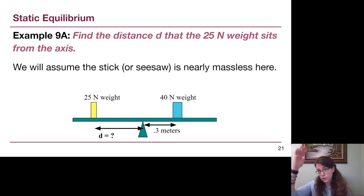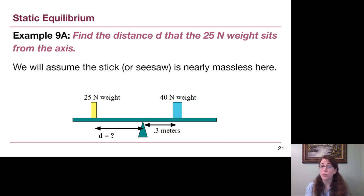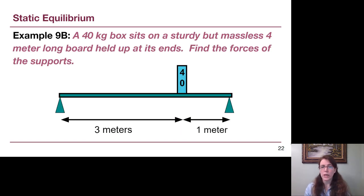The first example — which will have its own full video — is a fairly straightforward seesaw with two blocks placed at different distances. One thing to think about as we do these problems is to start with an understanding of what it generally looks like: a heavier object has to sit towards the center of the seesaw, and the lighter one is further away. We'll also see an example with two different supports, where we choose one support as our axis of rotation.